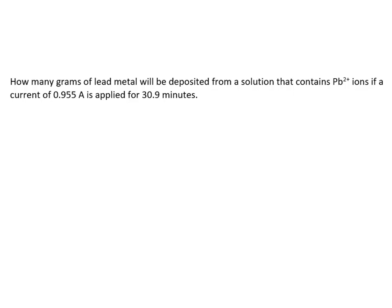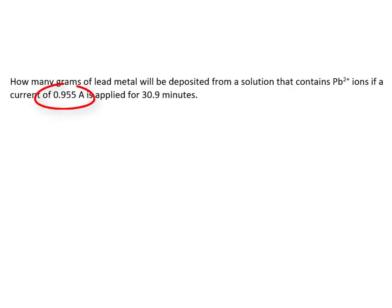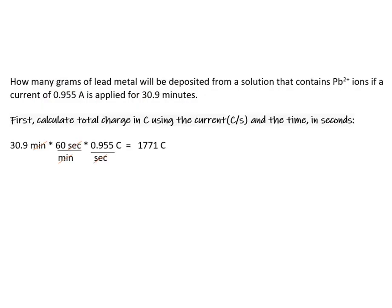In this electrolysis experiment, we're asked to determine how many grams of lead will be deposited from a solution containing lead two ions. The current is 0.995 amps and is applied for 30.9 minutes. The first thing we need to do is calculate the total charge in coulombs using the current and the time in seconds.